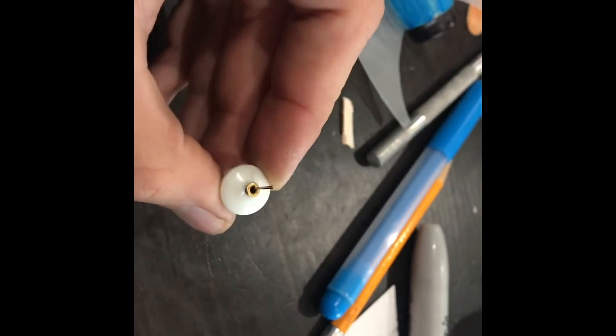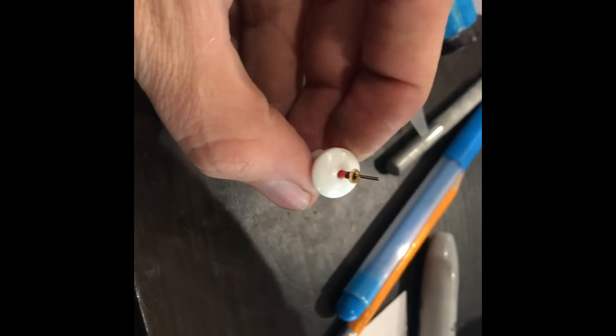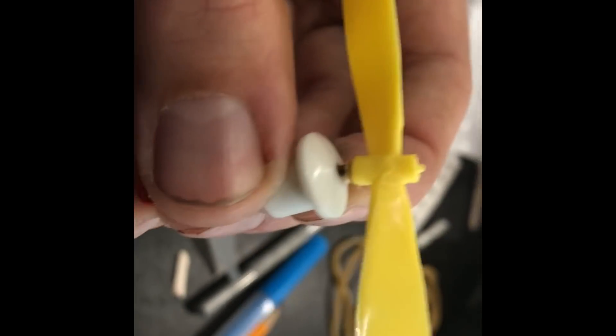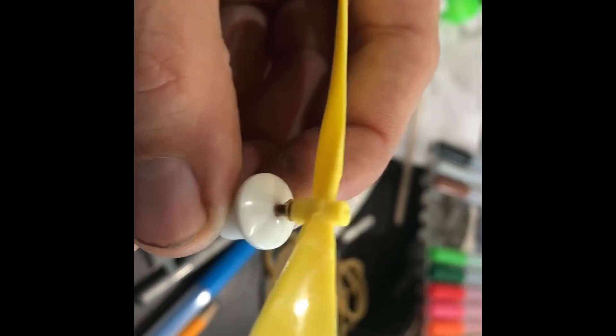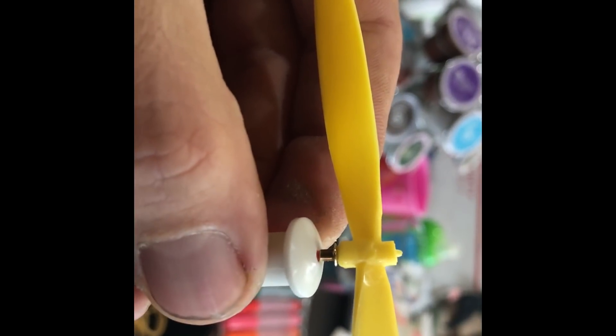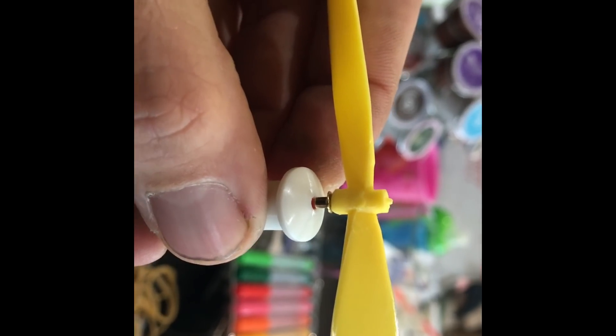All right, now, once that's in, then the propeller goes on top of that. Put the propeller on, Micah. You want to make sure, if you look at the propeller, there's one end that's curved, and there's one end that's notched. And you want to make sure that the curve goes towards the bottom, and that the notch is on the top.